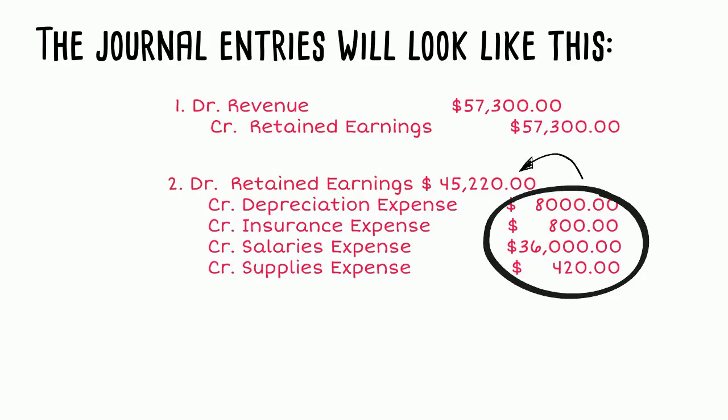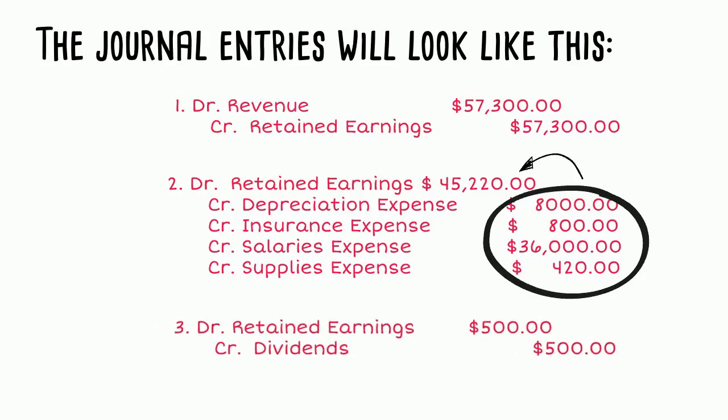The last closing entry is to close the dividends account. You will debit retained earnings and credit dividends. By making these journal entries, you will zero out the temporary accounts — revenue, expenses, and dividends — and update the retained earnings balance to reflect the changes in equity during the accounting period.